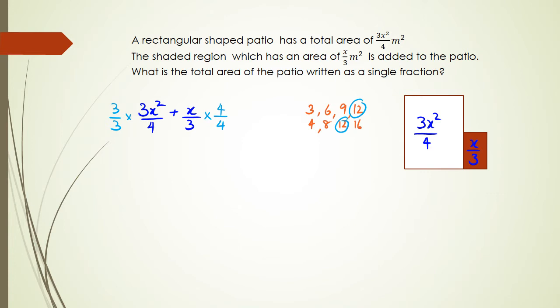And so by doing this, what I have is 3 times 3 is 9x squared over 12 plus 4 times x is 4x divided by 12. And this is still not a single fraction. To put it as a single fraction, I combine the two terms, 9x squared plus 4x divided by 12. And that is my final answer.